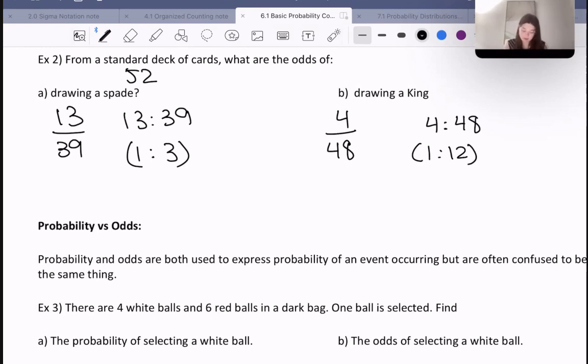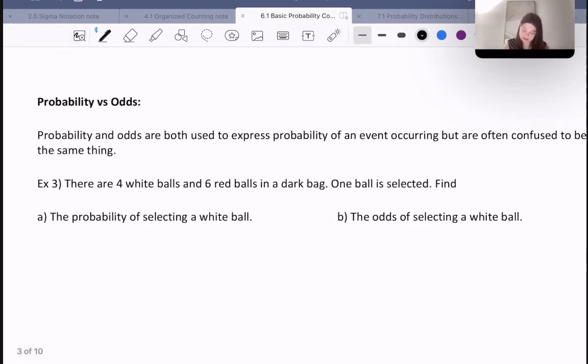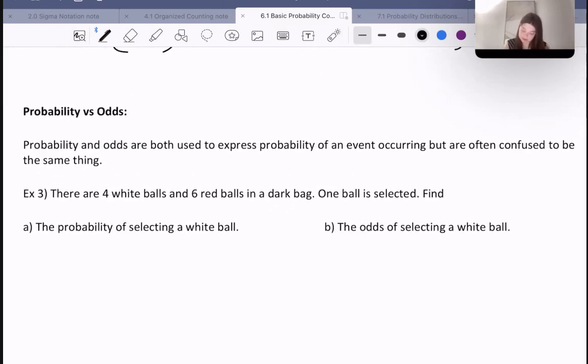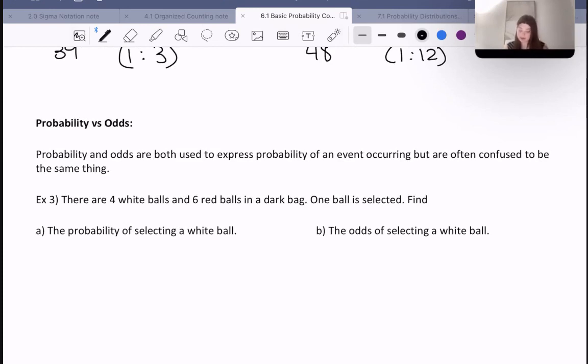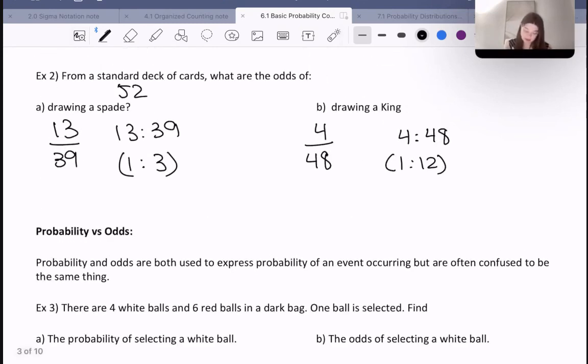Let's move on to probability versus odds. Probability and odds are both used to express probability of an event occurring but are often confused to be the same thing, which they are not. For example, the probability of drawing a spade would be 13 over 52, which is the total. However, in odds we only did the number of things that fit our event over what didn't, rather than the total.